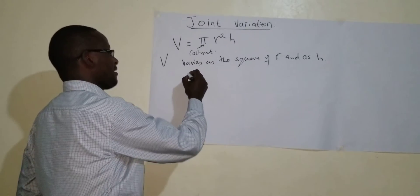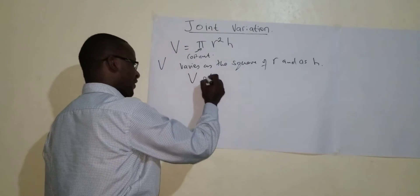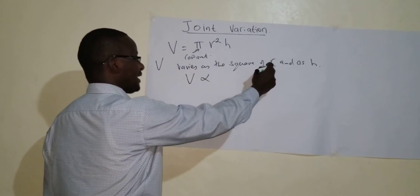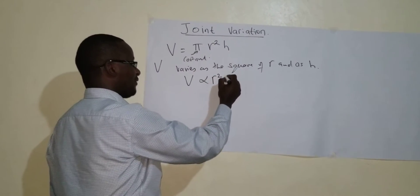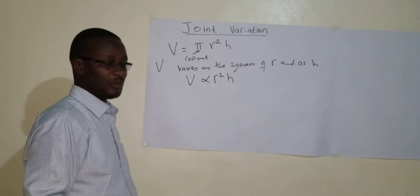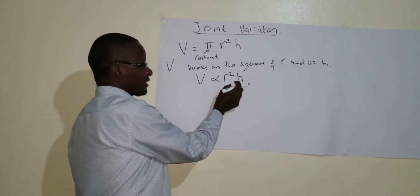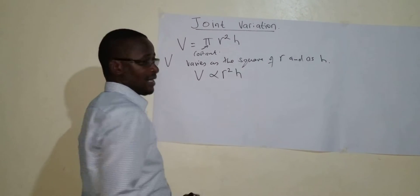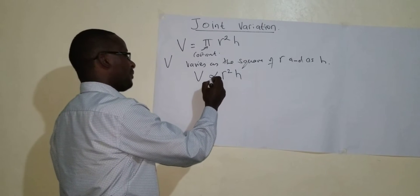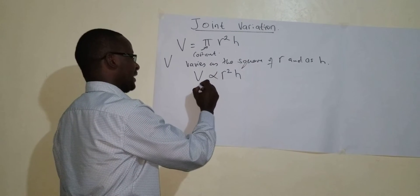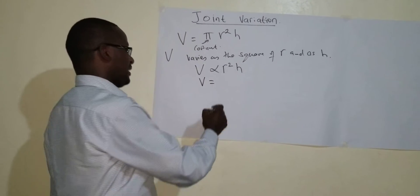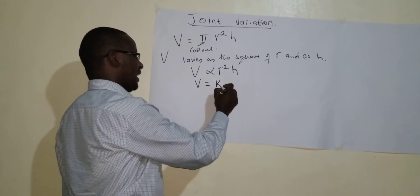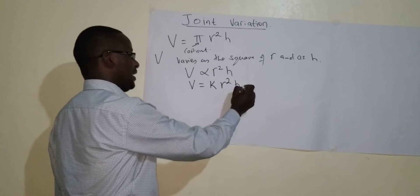I would write the equation as V varies directly as the square of R and H together. So there's a multiplication sign. So if I remove the proportionality sign and introduce equals sign, then I'll have V is equal to K R squared H.